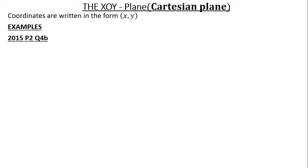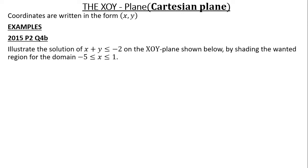Examples. 2015: Illustrate the solution of X plus Y less than or equal to negative 2 on the X-Y plane shown below, by shading the wanted region for the domain negative 5 less than or equal to X less than or equal to 1. When given a question like that, the values of X are known as the domain and the values of Y are known as the range. What you are supposed to do is to make Y the subject of the formula and then start replacing the values of X in the equation to find the values of Y, which are the range.